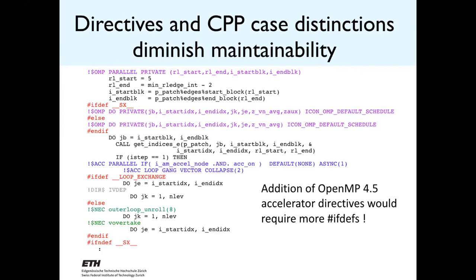Looking at the actual production code, those three simple loops have turned into 20-some lines of code with large numbers of ifdef blocks to turn features on and off depending on the target architecture. If OpenMP 4.5 accelerator directives were inserted, there would be even more ifdefs. All I want you to get from this slide is: the code is ugly.